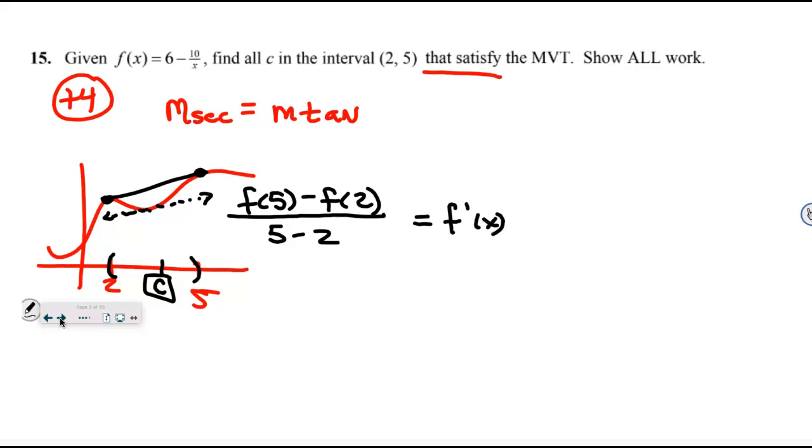So there was one point just for knowing. Even if some people just wrote MVT with M equals M, I gave them one point because that actually is what the MVT does. So then there was a point for calculating the average rate of change. And you just plug those numbers into f. 6 minus 2 is 4, minus 6 minus 5 is 1, all over 5 minus 2. That equals f prime of x. And there was one point for the f prime.